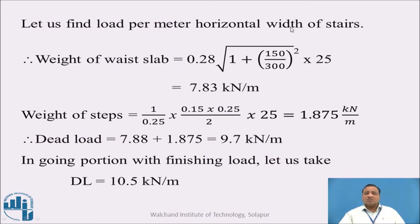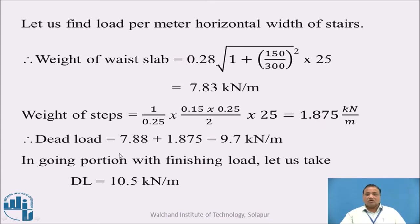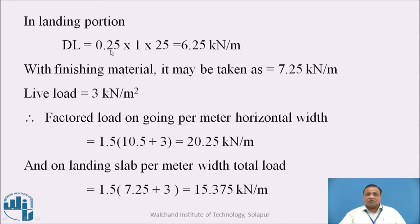Now we find the load per meter horizontal width of the stair. The weight of the waist slab equals 0.28 into square root of 1 plus R divided by T squared into 25, which works out to be 7.83 kN per meter. The weight of the triangular step is half into 0.15 into 0.25 into 25, equal to 1.875 kN per meter. Total dead load is 9.7 kN per meter. Including finishing load, the going portion load is 10.5 kN per meter. In the landing portion there are no triangular steps, so the load is 0.25 into 1 into 25 equal to 6.25 kN per meter, and with finishing material it is 7.25 kN per meter.